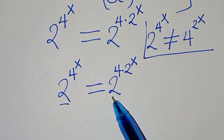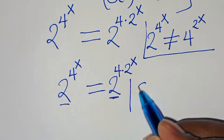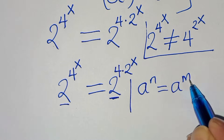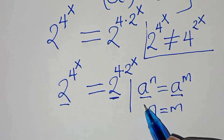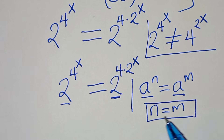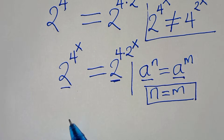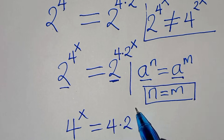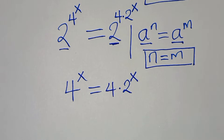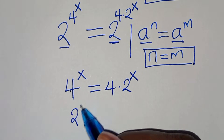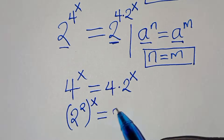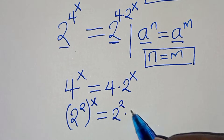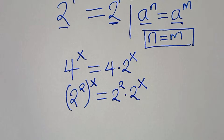Now since the bases are common — that is, a to the power of n equals a to the power of m — since the bases are common, exponent n is equal to m. So this implies that 4 raised to the power of x is equal to 4 times 2 to the power of x.